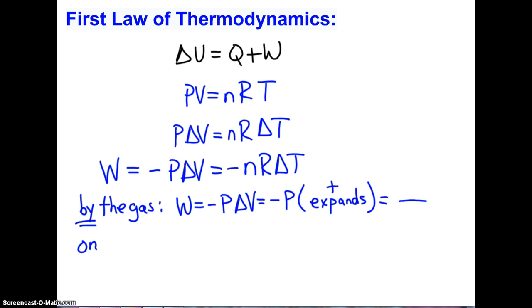If the work is done on the gas, following W equals negative P delta V, this would mean some outside force or outside system is compressing the container doing work on the gas. Compressing the gas means that the final volume will be less than the initial volume. Therefore, the change in volume would have a negative value, and a negative times a negative is an overall positive value.